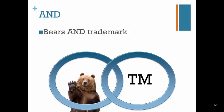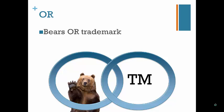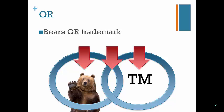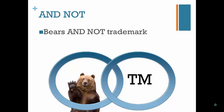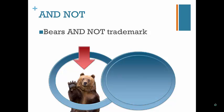The AND connector only returns results that have both terms somewhere in the document. OR returns results that have either word anywhere in the document. The AND NOT connector returns results with the first word but not the second word. This connector should be used with caution, because you can inadvertently exclude relevant results.